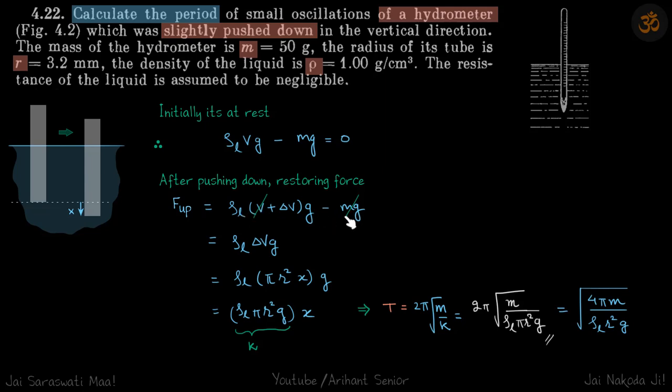And ρ_l V g is equal to mg, so the restoring force, that is the extra force which is now acting on the hydrometer upwards, is ρ_l Δv into g. Δv is the change in volume.